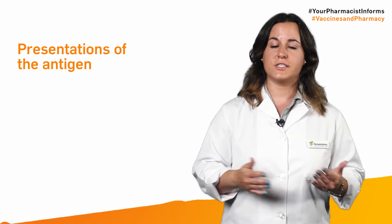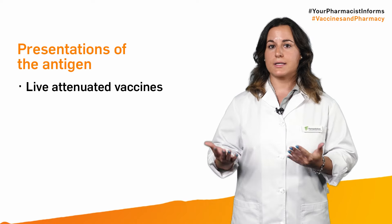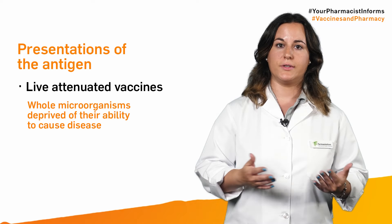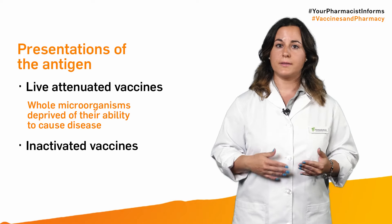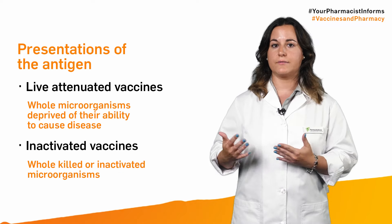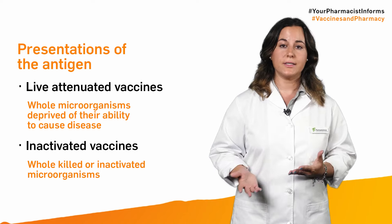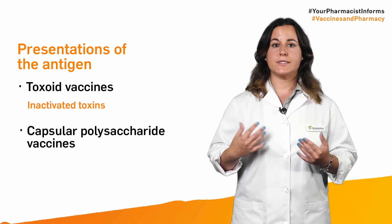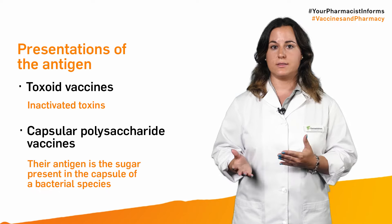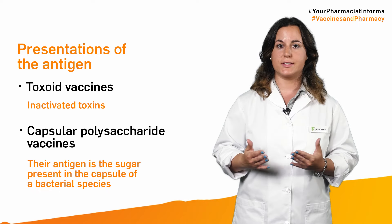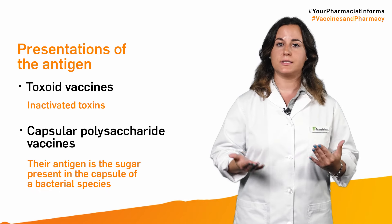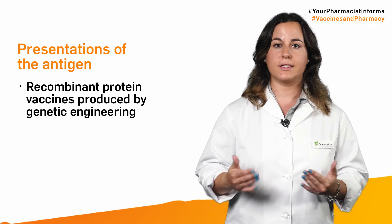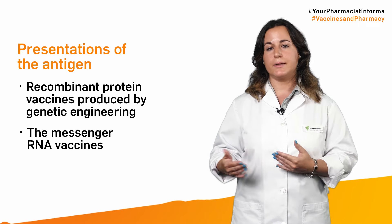This antigen can be presented in different forms depending on the method of vaccine manufacturing. Thus, a distinction is made between live attenuated vaccines, which include whole microorganisms deprived of their ability to cause disease; inactivated vaccines with whole killed or inactivated microorganisms; toxoid vaccines, which are inactivated toxins; capsular polysaccharide vaccines, whose antigen is the sugar present in the capsule of a bacterial species; recombinant protein vaccines produced by genetic engineering; and the messenger RNA vaccines.